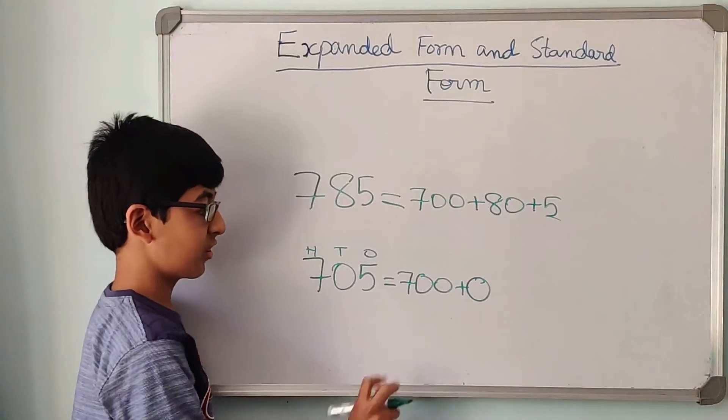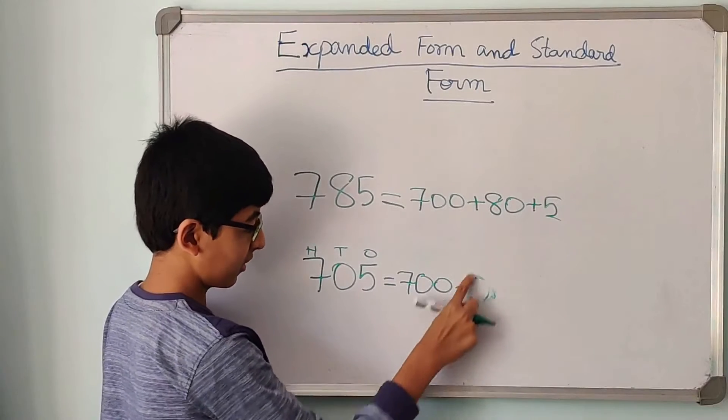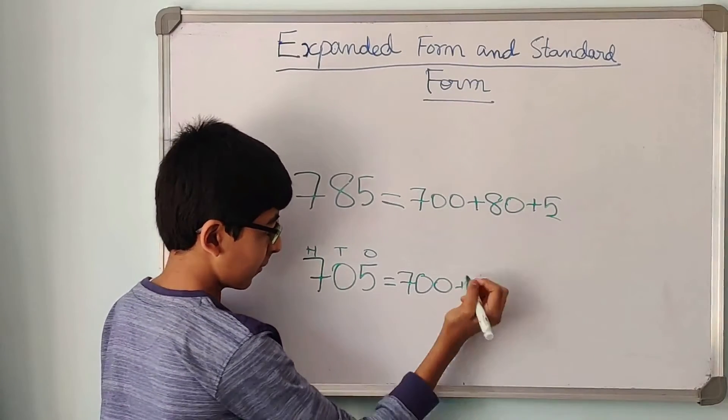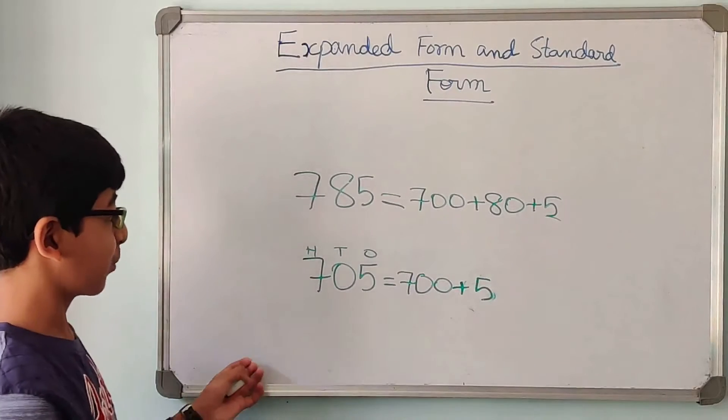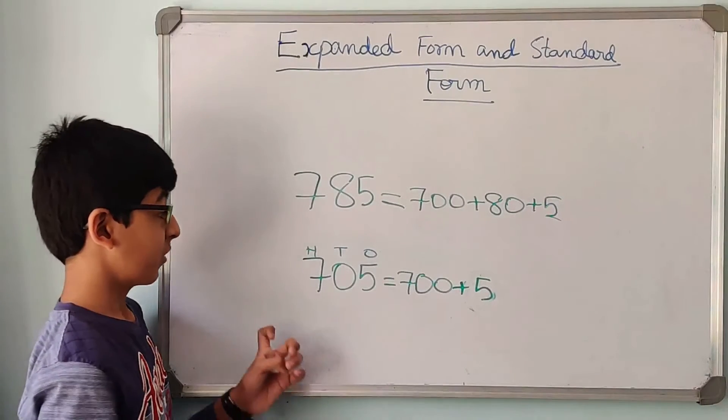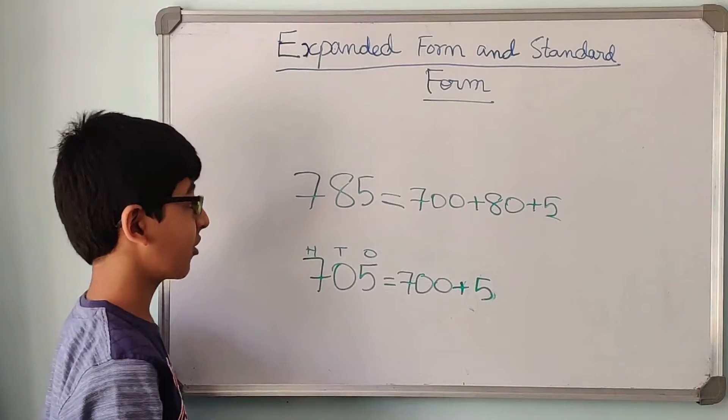But there is no need of writing 0, so we can directly write 700 plus 5. So this is the expanded form of 705. 700 plus 5.